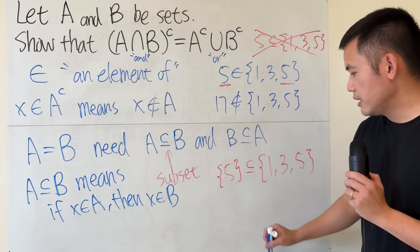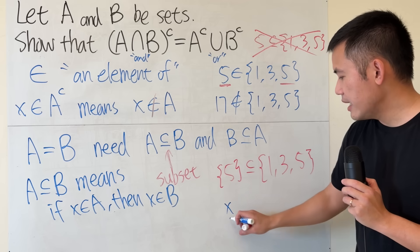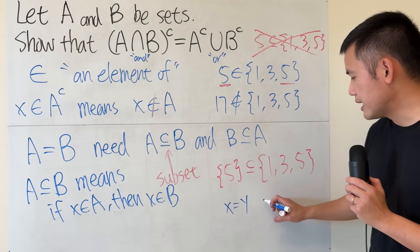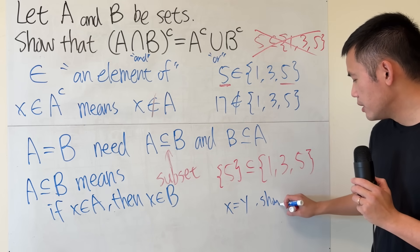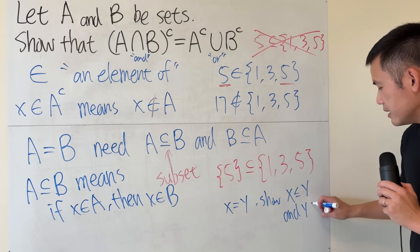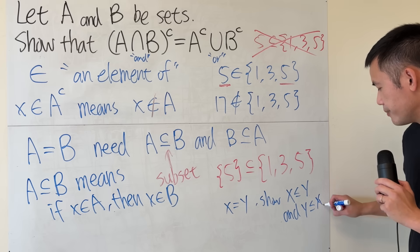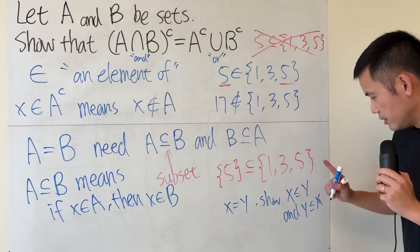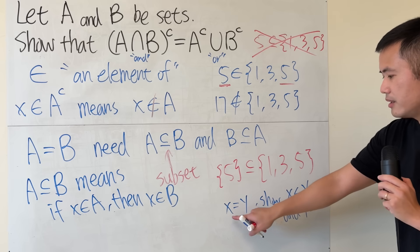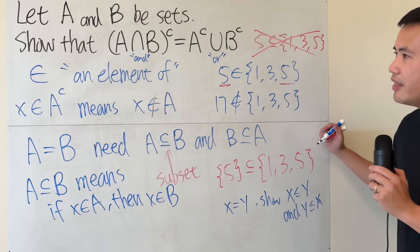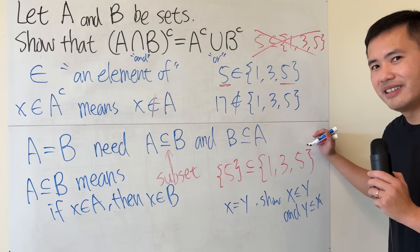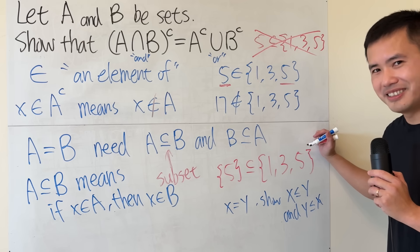You can just think about it like this: if you have two numbers, say x and y, you want to show that they are equal. What you can do is show x is less than or equal to y, and y is less than or equal to x, because the only time for this to be both true is that they are just equal. And I think this is pretty much all we need. Now let's see how to get started with the proof.